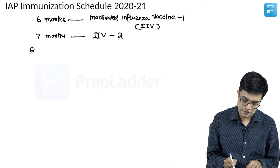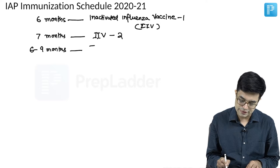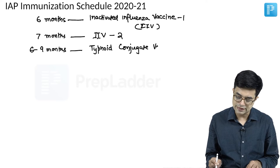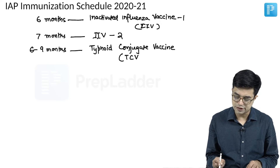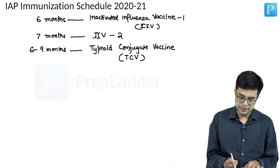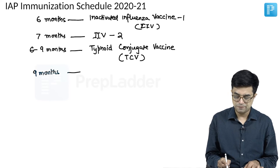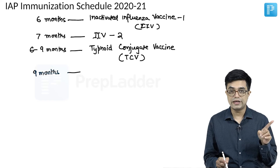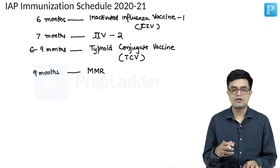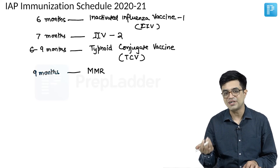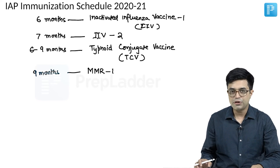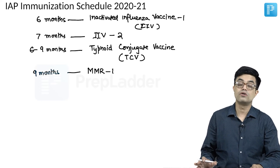From 6 to 9 months, the typhoid conjugate vaccine (TCV) is given as a single dose, which provides lifelong protection — no booster is needed. Then at 9 months of age, in the national immunization schedule MR-1 and vitamin A are given. Here in the IAP schedule, you will use MMR-1, because MR alone or measles alone is not available in the private sector. The IAP schedule talks about only MMR-1 and does not mention vitamin A at 9 months.